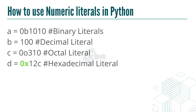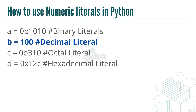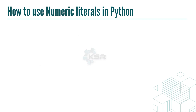Octal is base 8 and hexadecimal is base 16. In practice, as a data scientist, we mostly work with decimals. Binary, octal, and hexadecimal are important for theory. Just remember: '0b' is binary, '0o' is octal, and '0x' is hexadecimal.